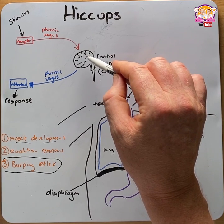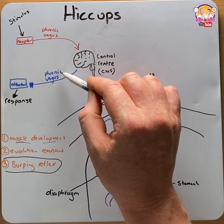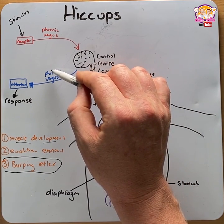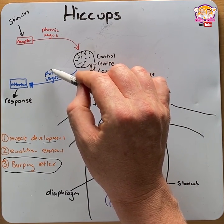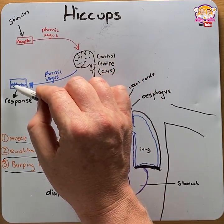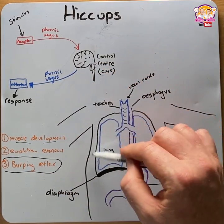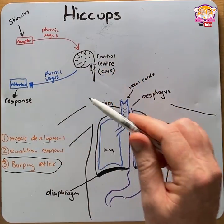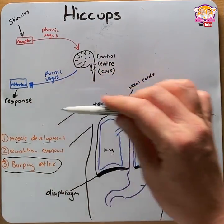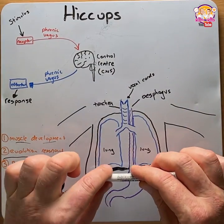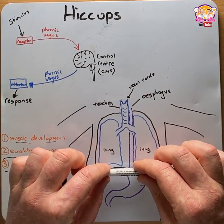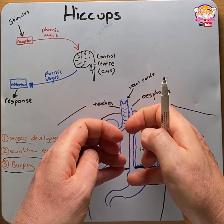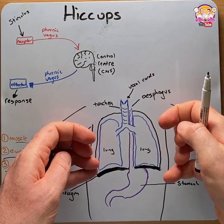Here it sends a motor signal via the phrenic nerve, the vagus nerve, and some somatic nerves to effectors — particular muscles that cause a response. Specifically, the diaphragm would descend downwards and the external intercostals will go out.